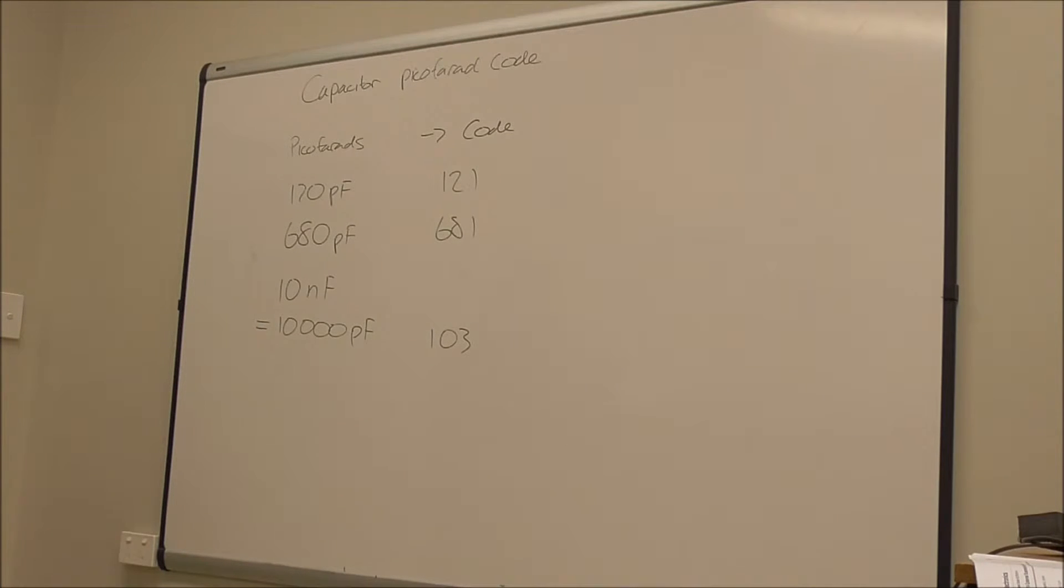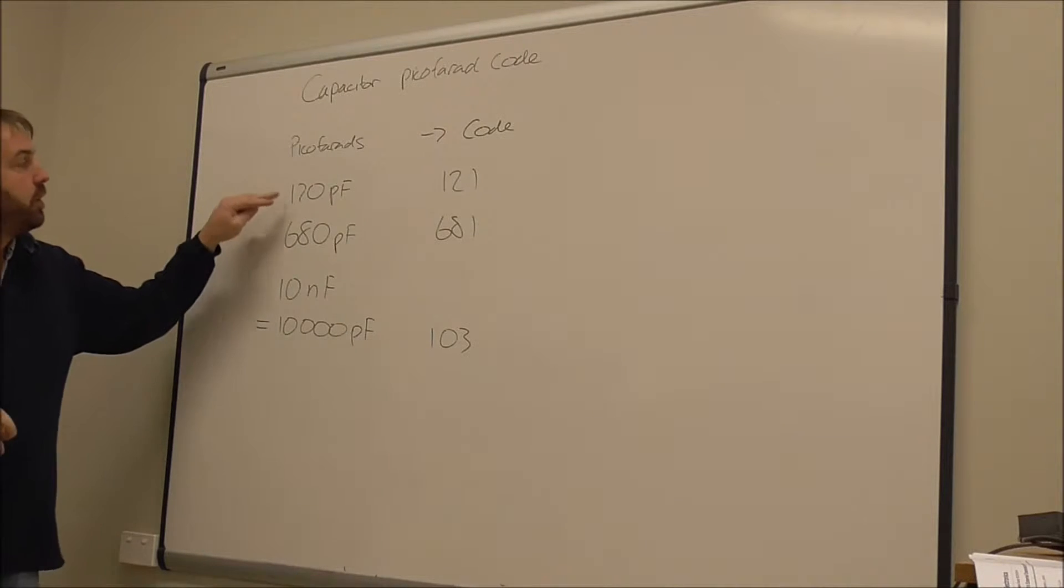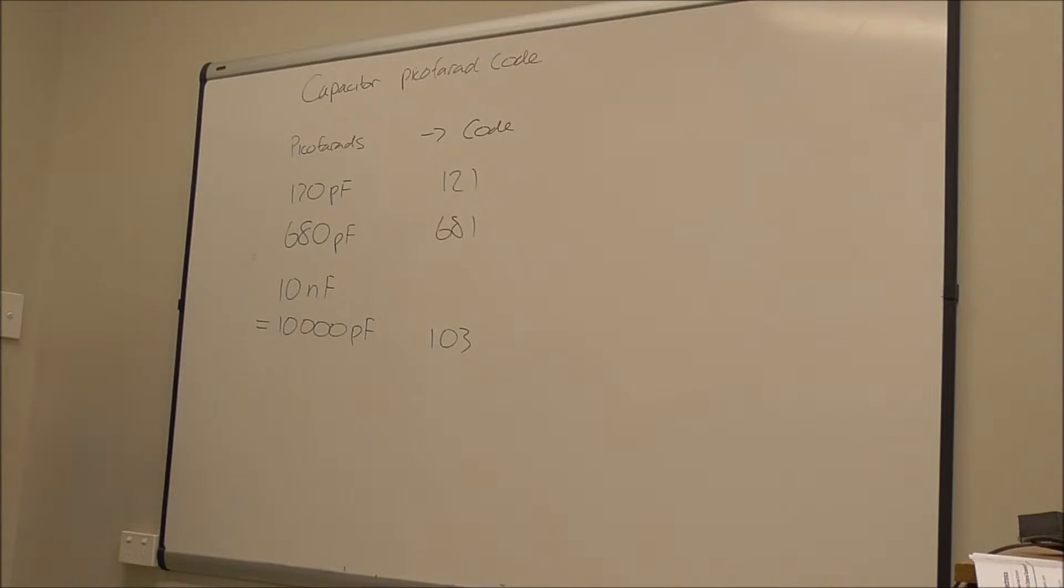If you actually think about it, this really is very similar to the resistor colour code that we've been using, the three band code, or four band if you include the tolerance. So the first two colours are the first two digits of your value.